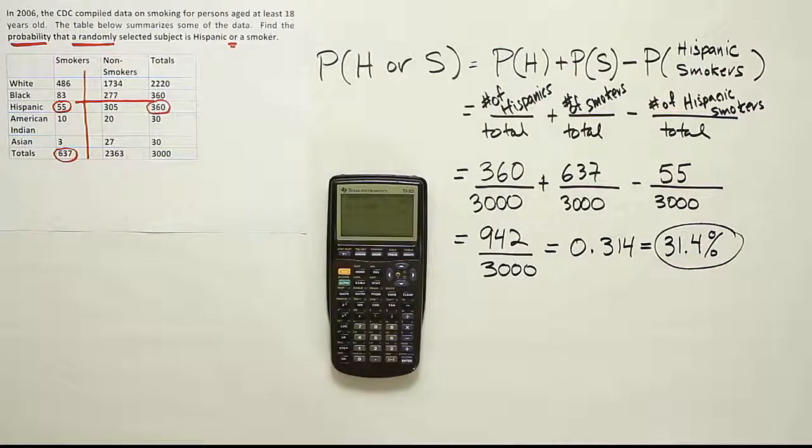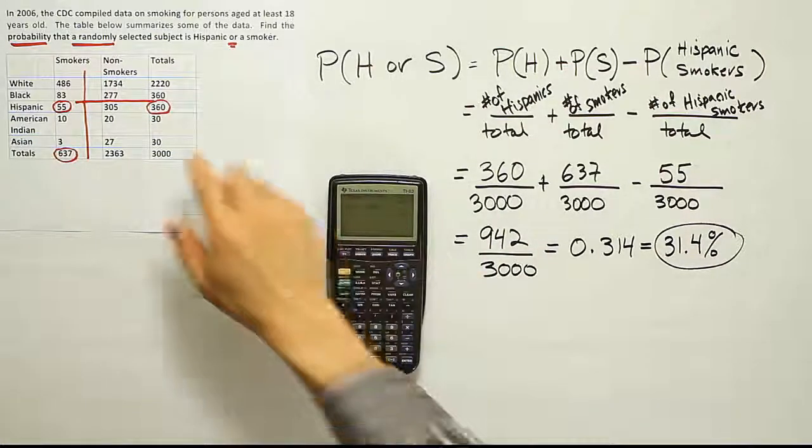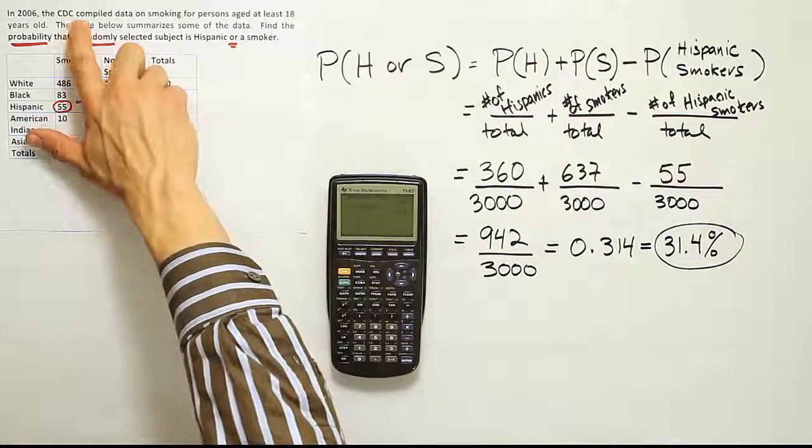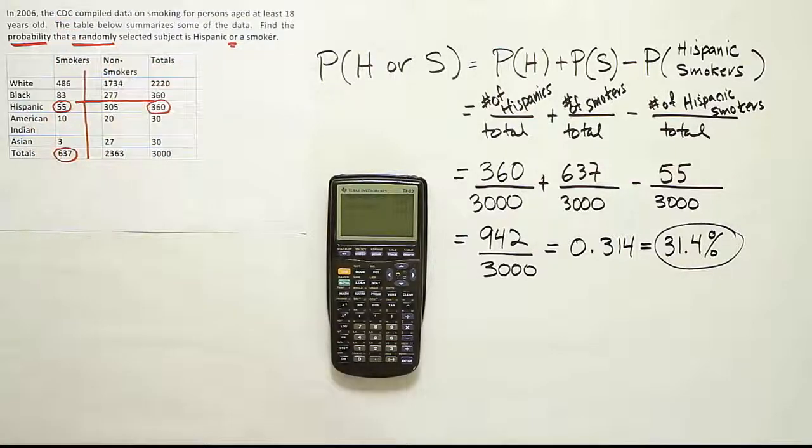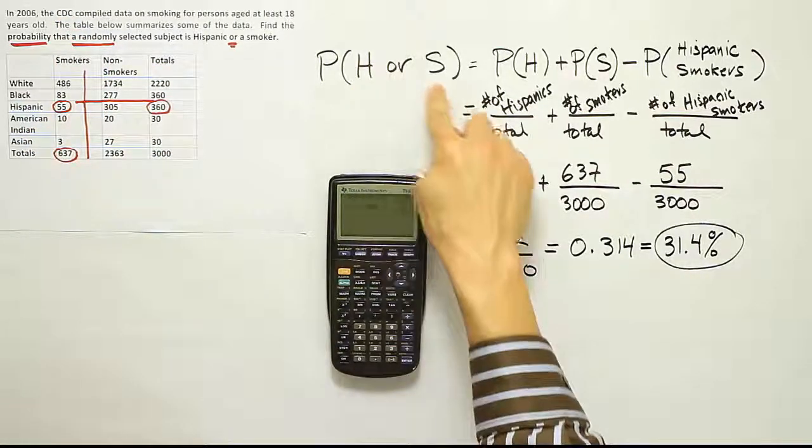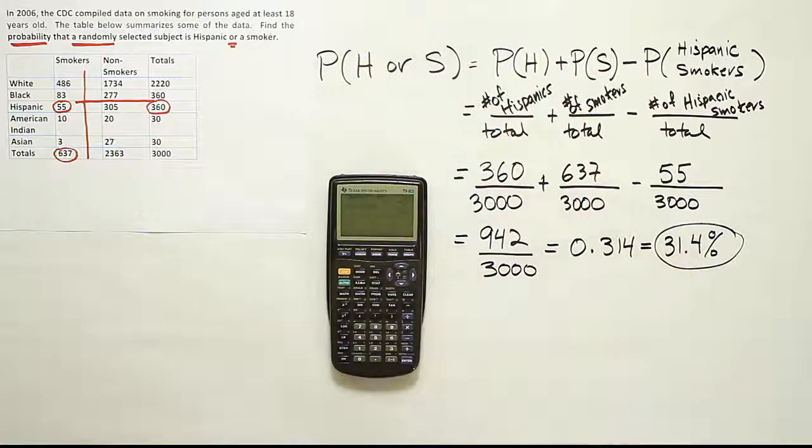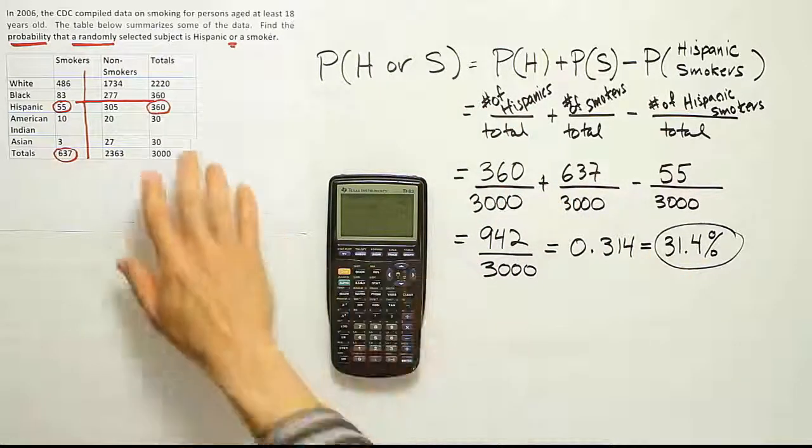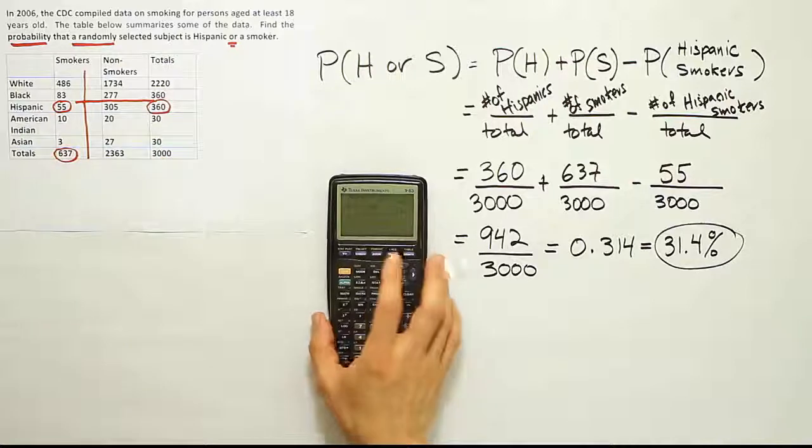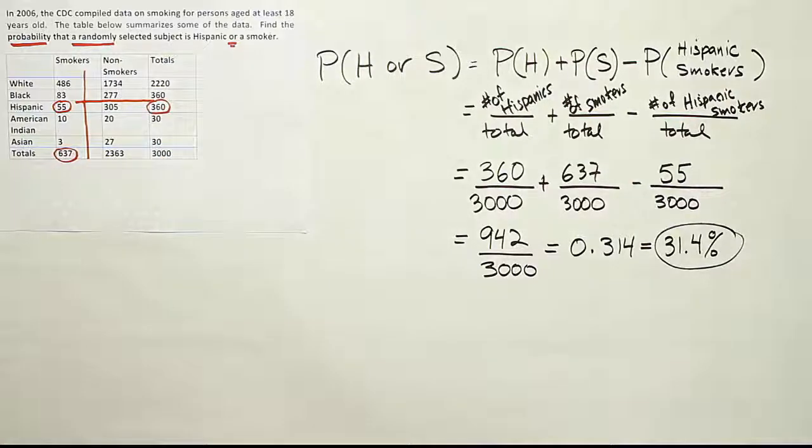And that's it. So when you look here, you say, from this study in 2006, the probability that a randomly selected subject is either Hispanic or a smoker is about 31.4% of the population. At least the population involved in this group.